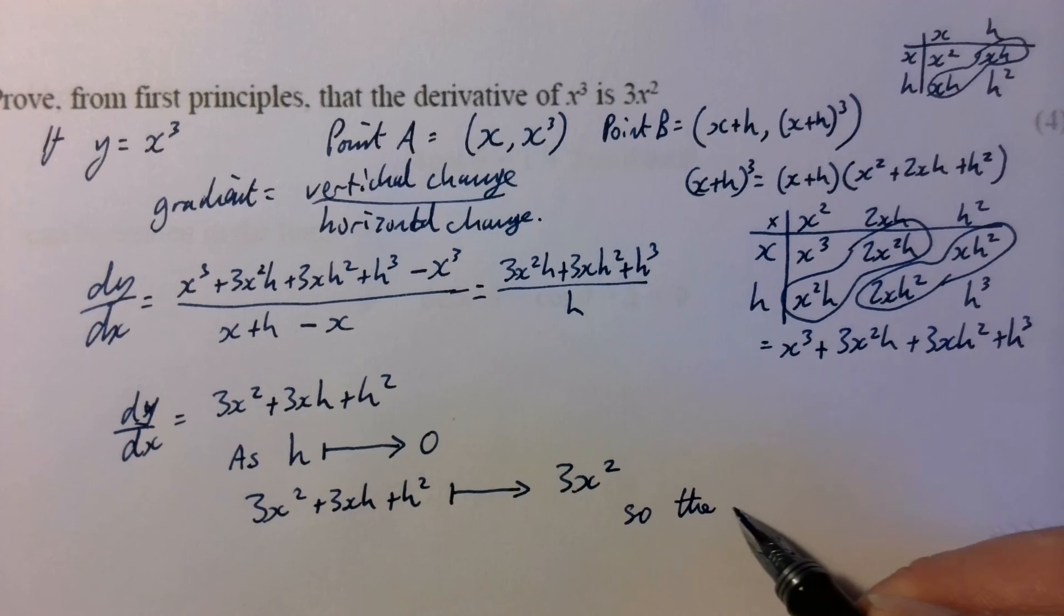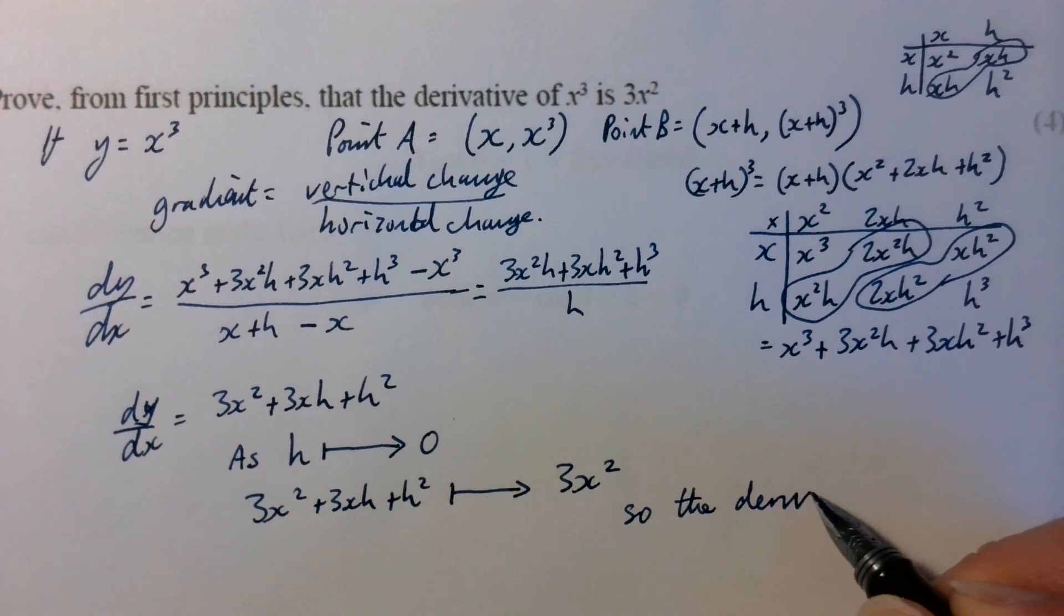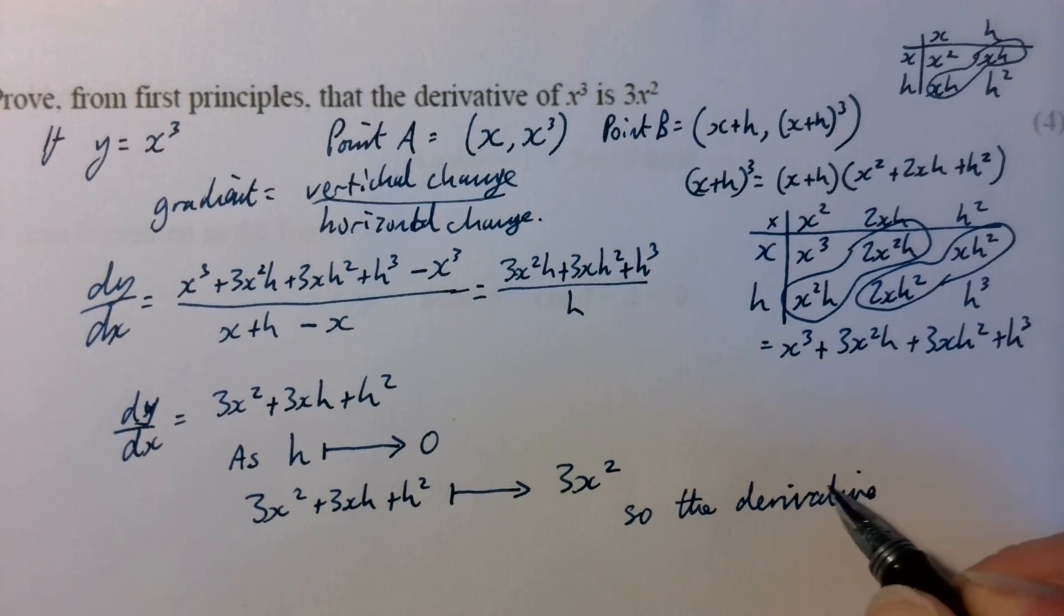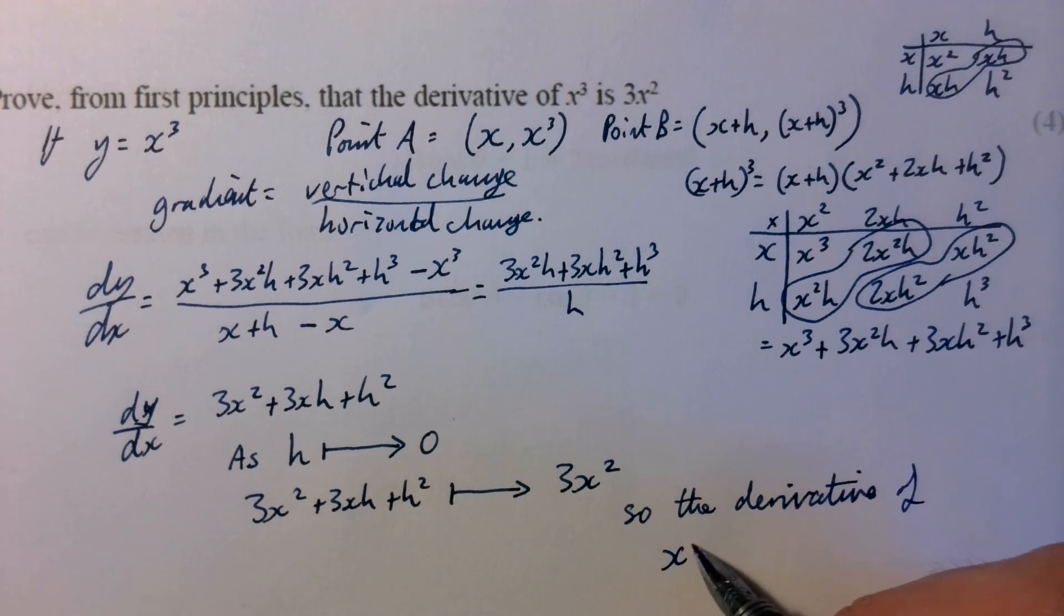So the derivative, and they always like you to quote what you've actually proved at the end, of x cubed is 3x squared.